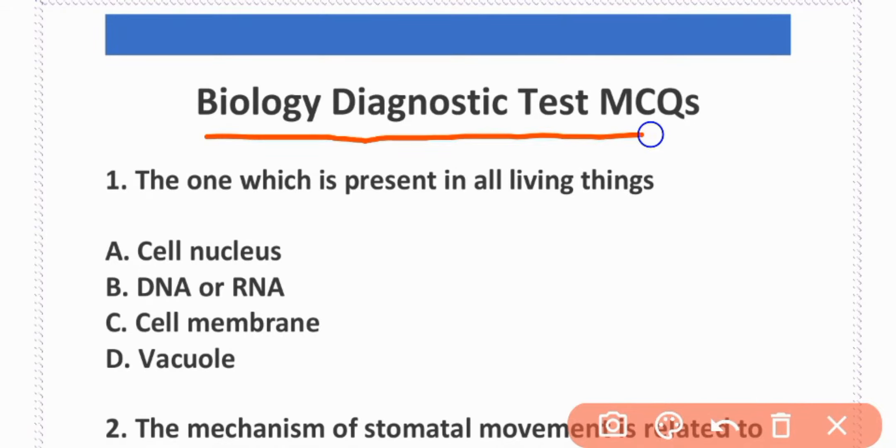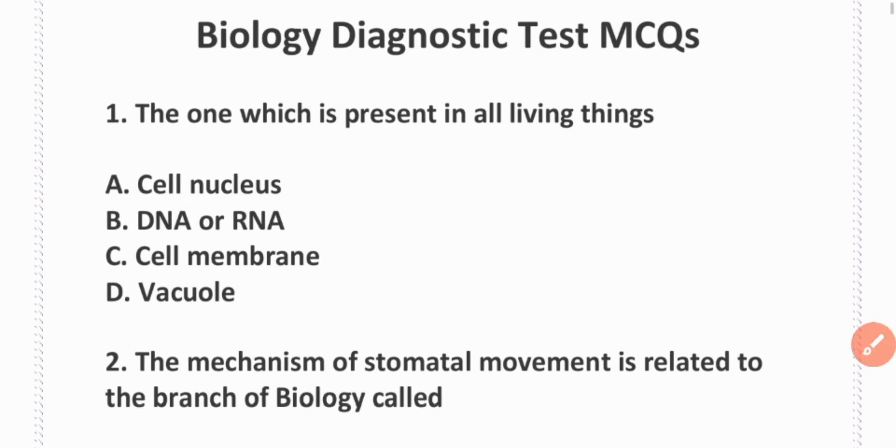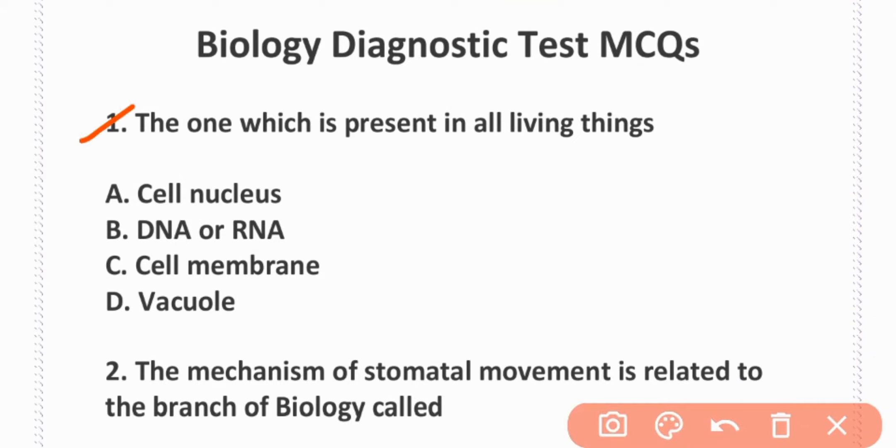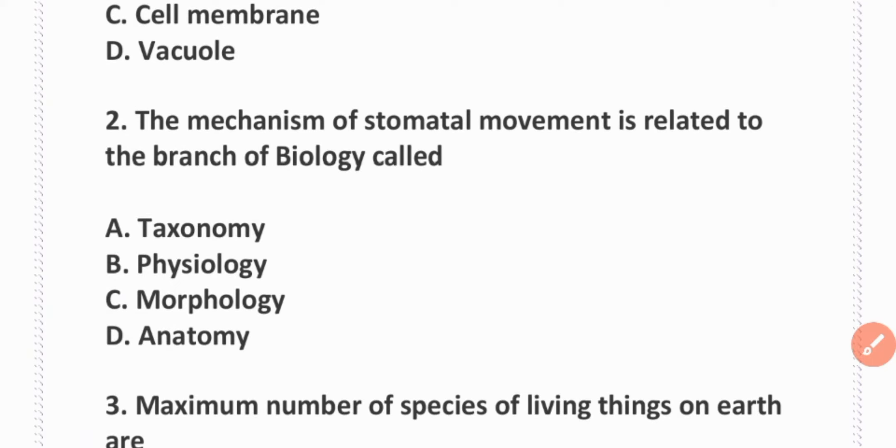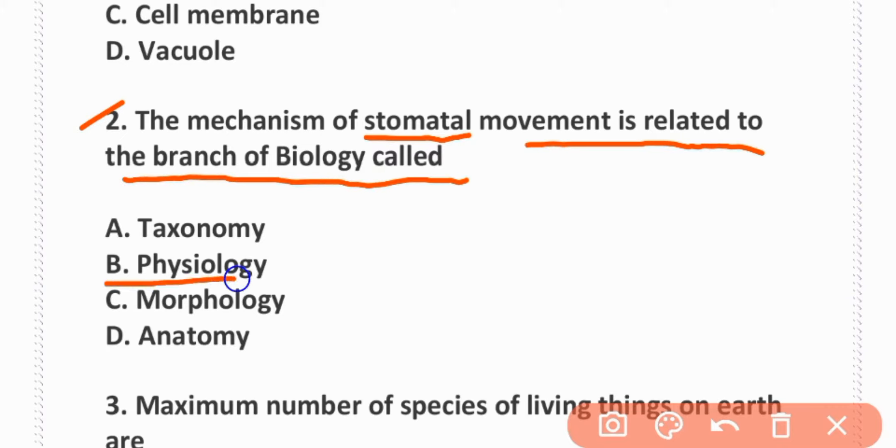Biology and diagnostic test MCQs. The one which is present in all living things is DNA and RNA. Option B is correct. The mechanism of stomatal movement is related to the branch of biology called physiology.